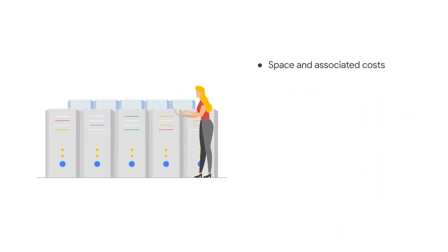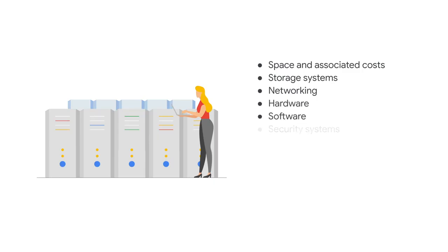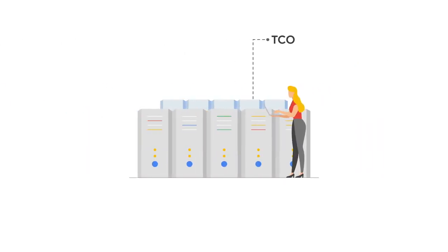Bringing this back to the real world — historically, when companies spent a substantial amount of money up front to set up their IT infrastructure, the capital expenditure would include paying for data center space and associated costs, such as power and cooling, storage systems, networking, hardware, software, and security systems. The total cost of ownership, or TCO, in this case would be the cost of setting up, managing, controlling, and optimizing every layer of this stack, in addition to the personnel required and skilled workers.